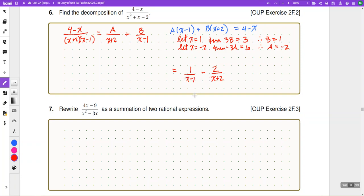For our next, rewrite, this is a sum of two rational expressions. Another way of saying find the decomposition. We will rewrite this with the factored form of my denominator. I'm quadratic, so I'm going to consider two terms. Cross-multiply by my common denominator.